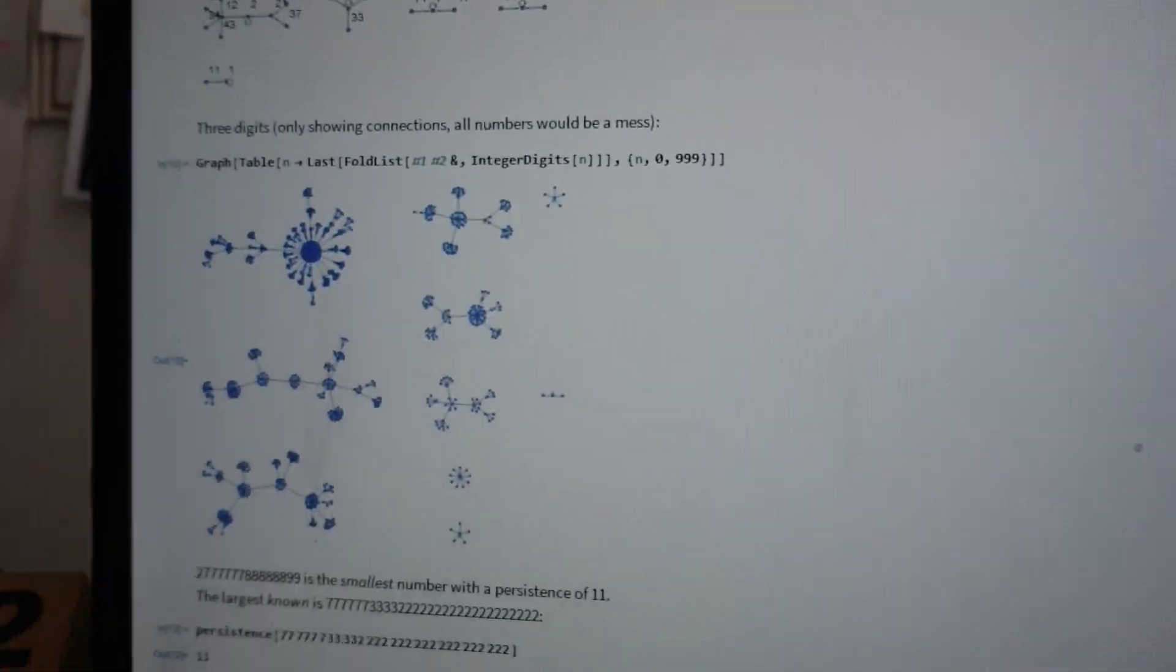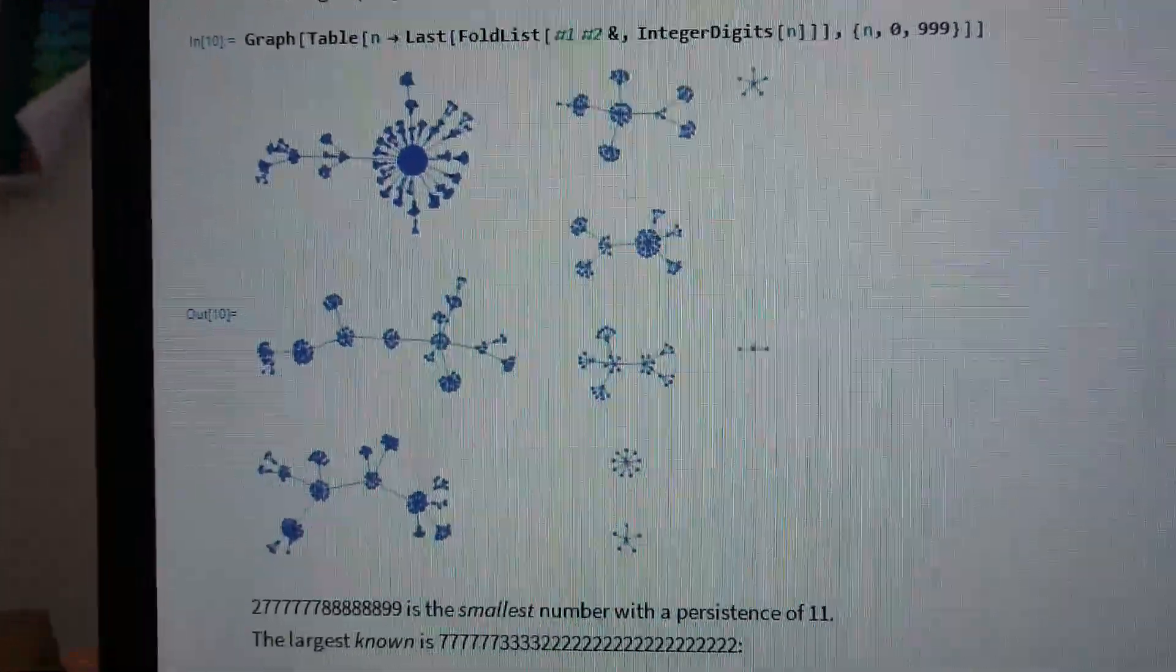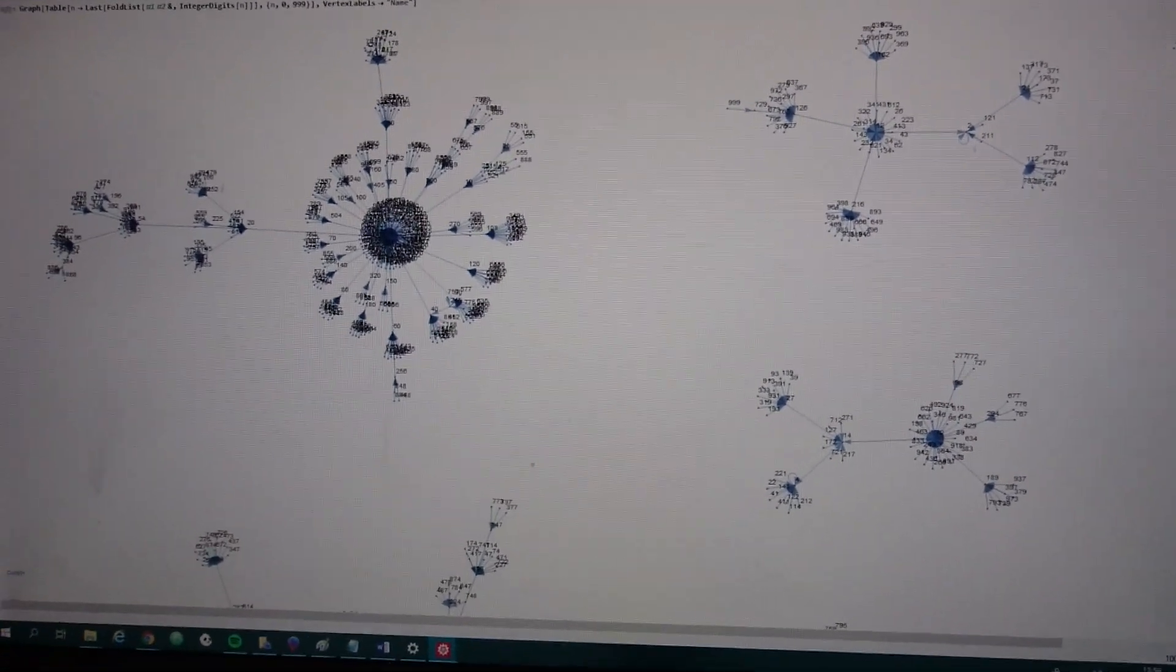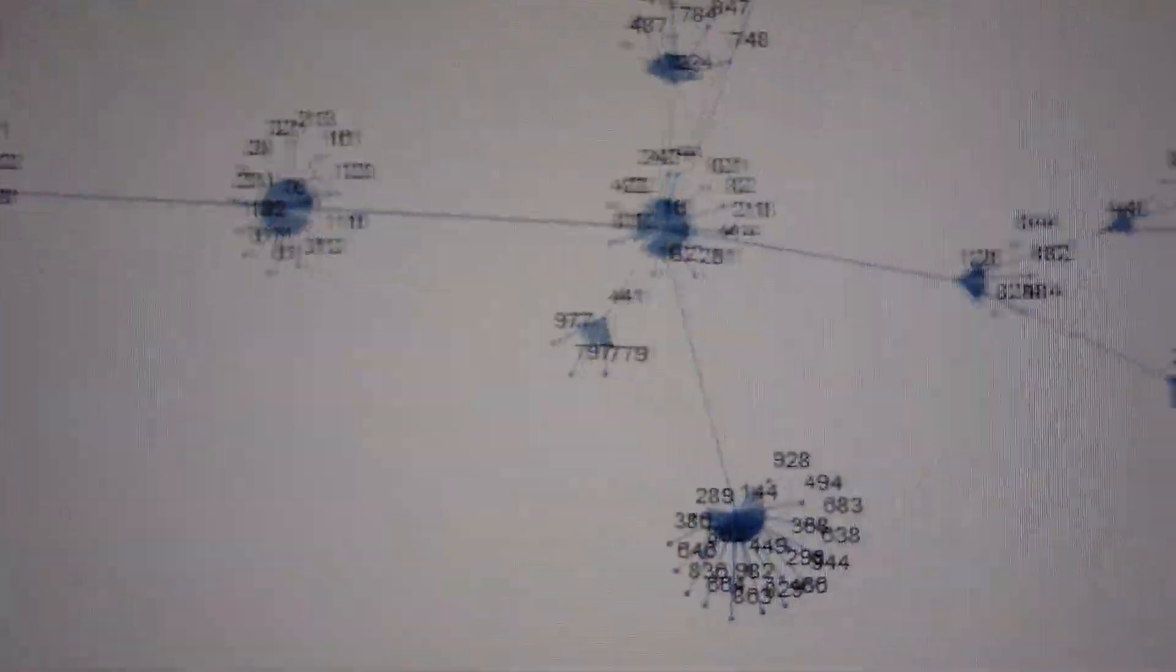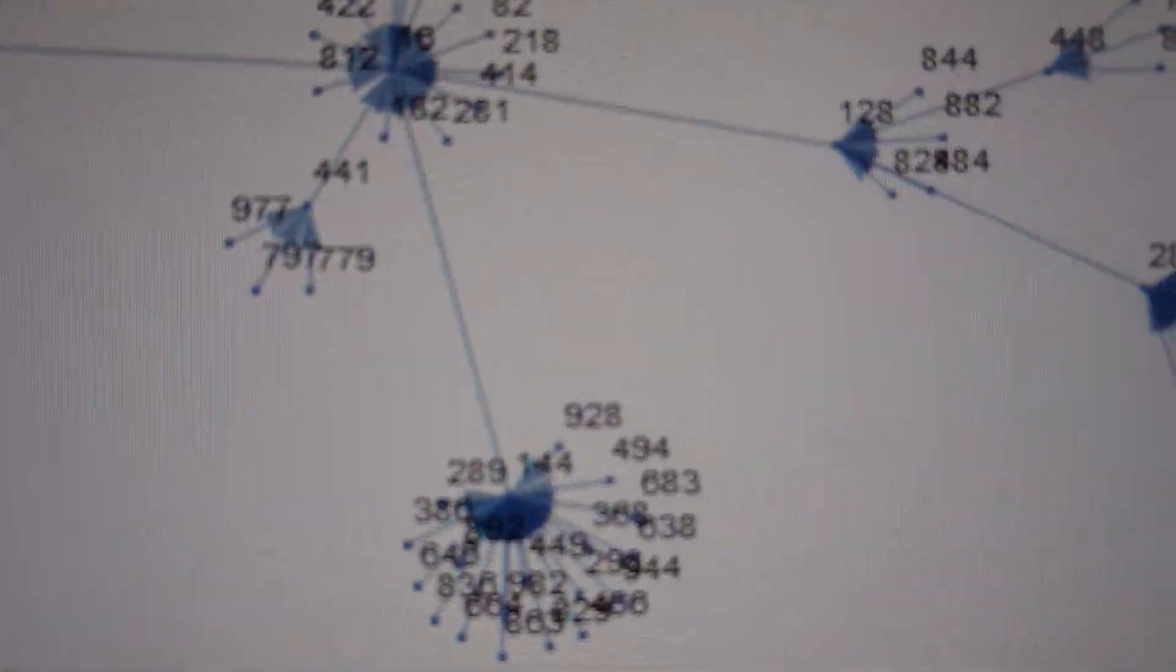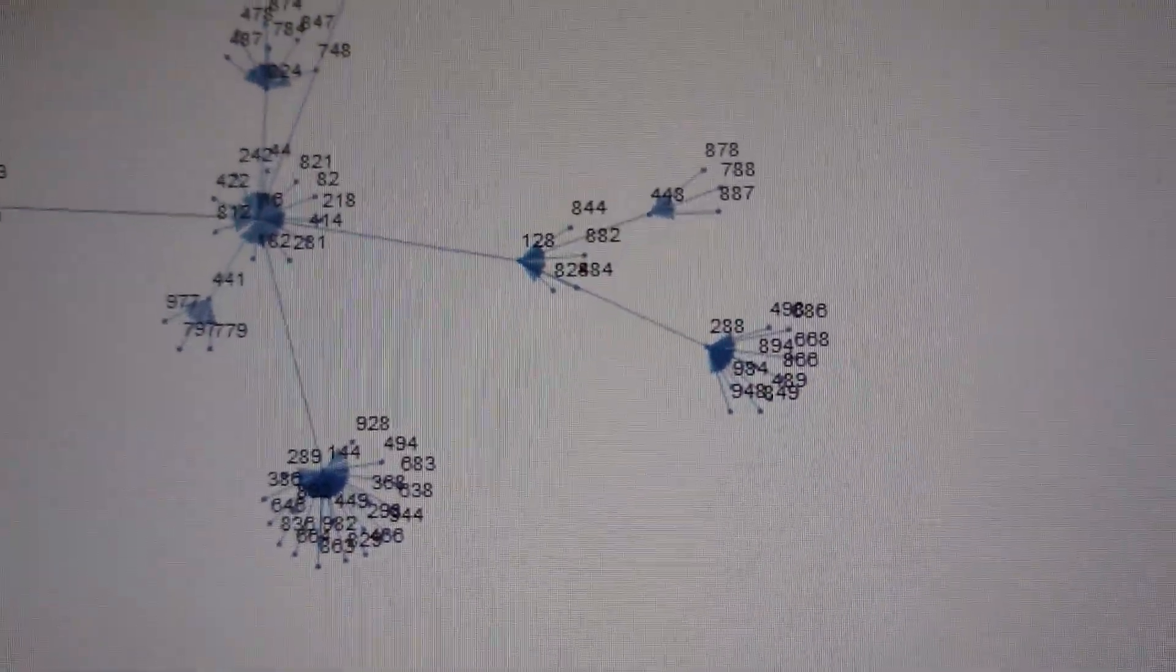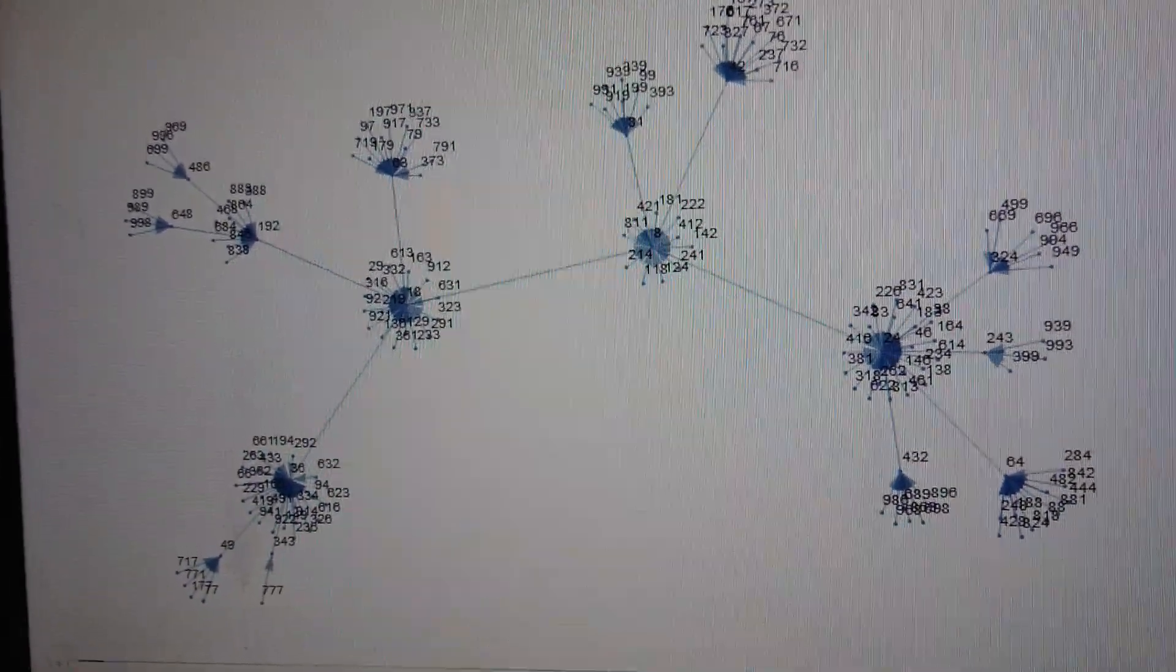These are three digit numbers. Only showing the connections. By the way. All numbers would be a mess. But this one you can show. I have put the numbers in. And it is a mess. Except for when you make the image really big. So I just made the image as big as I could.